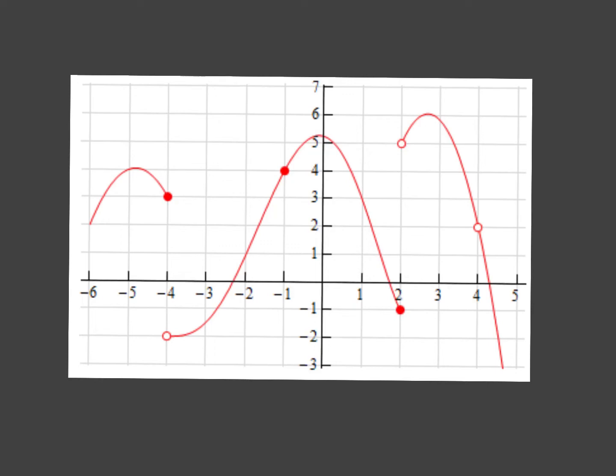What does it mean for a function to be continuous at a certain point? And if we're given a specific point, how can we determine whether or not the function is continuous there? In this video we'll be using this graphed piecewise function to answer those questions.